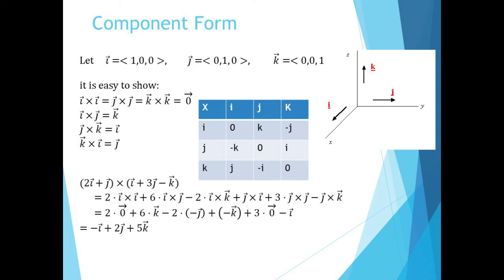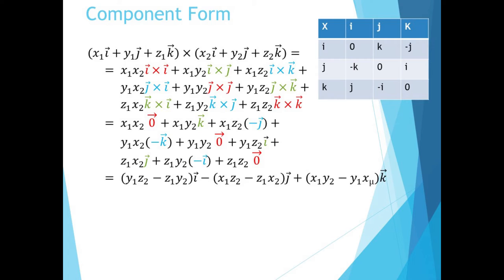In the example below, we find 2i plus j cross i plus 3j minus k. Each term such as i cross i and j cross k gives us something we can evaluate from our table. We eventually end up with minus i plus 2j plus 5k. In fact, we could have started with this table and derived exactly the formula that we started with for our cross product.